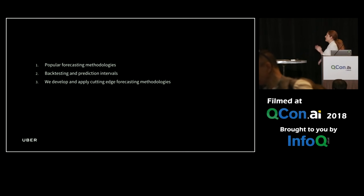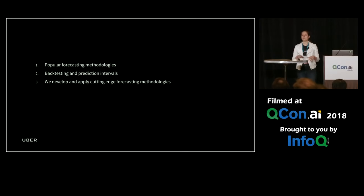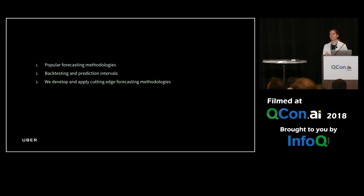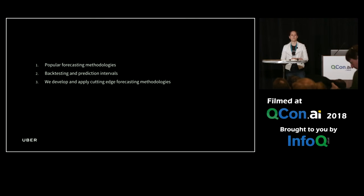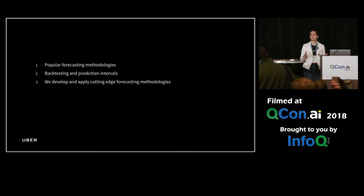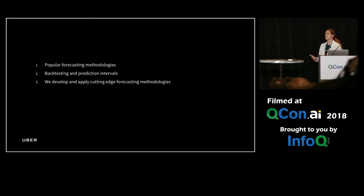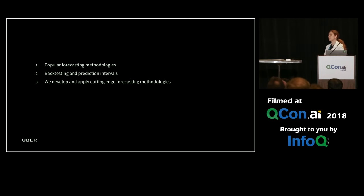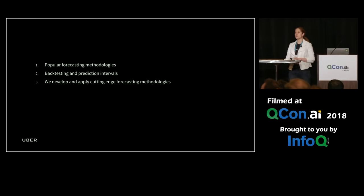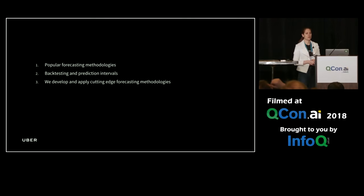Here are the three key takeaways for this talk. I'll be touching on some of the popular forecasting methodologies. We're going to talk about the importance of backtesting in order to compare various different forecasting methods, as well as prediction intervals, which are critical in order to understand and give actionable business insights. And finally, I'm also going to give you a glimpse of some of the cutting-edge work that we're doing in the forecasting realm at Uber.